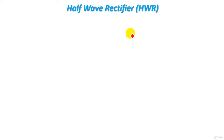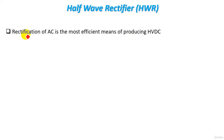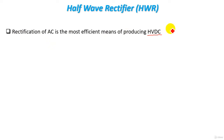In this tutorial we will understand the second method for producing high voltage DC. This method is the rectification method. Rectification of AC is the most efficient means of producing high voltage DC. A rectifier circuit converts high voltage AC into high voltage DC — this is the main concept of rectification.